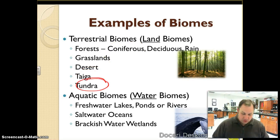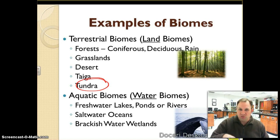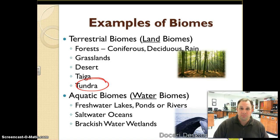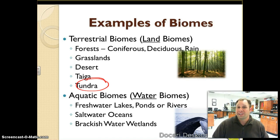Then we have our tundra — an area where the ground is frozen, that permafrost. The soil is frozen so plants really can't get roots deep into the ground. The roots spread along the top of the surface and into the very top unfrozen layers of soil. You don't find large trees or large shrubs here, so you have lots of small grasses and small shrubs, which consequently determines the type of animals that can live there.